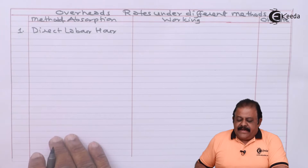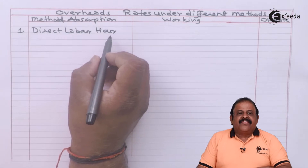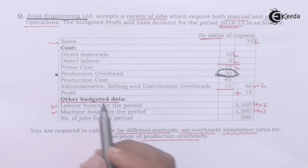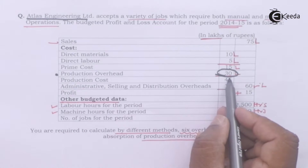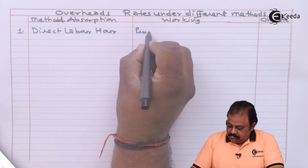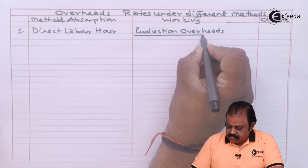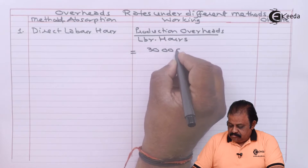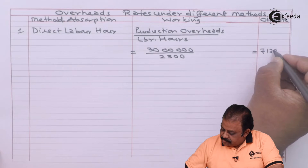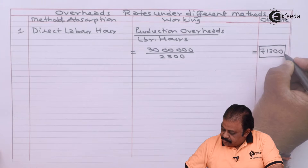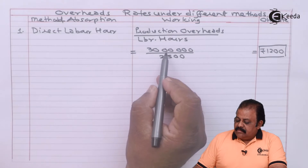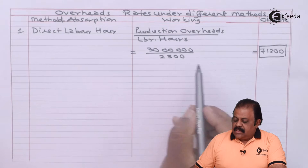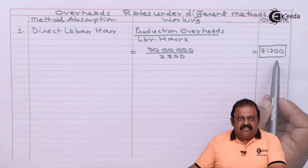First, we will calculate the overhead rate based on the direct labor hour method. Labor hours for the period are 2,500 hours. Production overheads 30 lakhs divided by labor hours 2,500 gives us a rate of rupees 1,200 per hour.